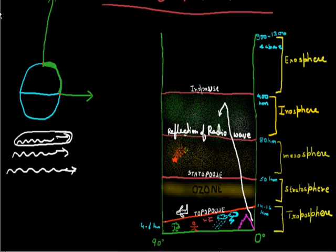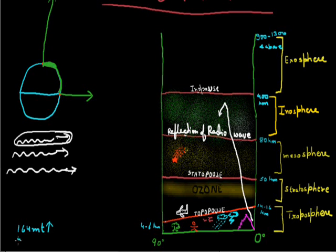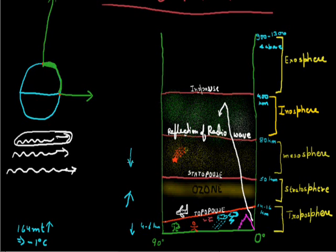As discussed earlier, let us now talk about the temperature in each sphere. In the first sphere, the Troposphere, as we go upward by approximately 164 meters, the temperature decreases by 1 degree centigrade. So in the Troposphere, temperature decreases as we go up. In the Stratosphere, temperature increases as we go up. In the Mesosphere, temperature decreases as we go upward. In the Ionosphere, temperature is increasing. In the last sphere, the Exosphere, the temperature is again decreasing as we go upward.